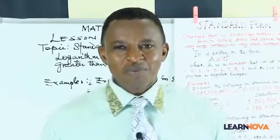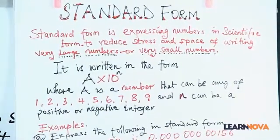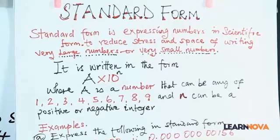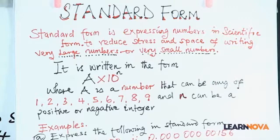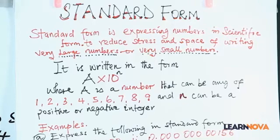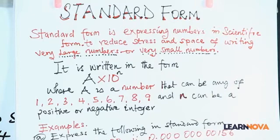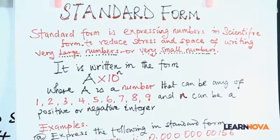Standard form is expressing numbers in scientific form to reduce the stress and space of writing very large or very small numbers. Standard form is written in the form A multiplied by 10 raised to the power n, where A is a number that can be any of 1, 2, 3, 4, 5, 6, 7, 8, or 9, and n can be a positive or negative integer.